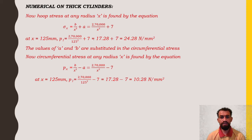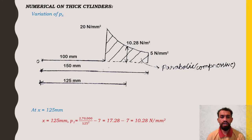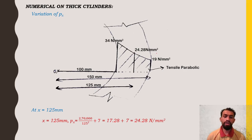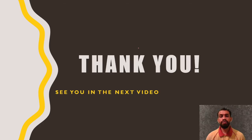For the radial stress at x = 125 mm: px = B/x² − A = 270,000/15,625 − 7 = 10.28 N/mm². For the variation diagram: internal radius 100 mm and external radius 150 mm, with mid-radius 125 mm. The radial stress at 125 mm is 10.28 N/mm² and hoop stress at 125 mm is 24.28 N/mm². These values are plotted to show the parabolic variation. Thank you, and see you in the next video.